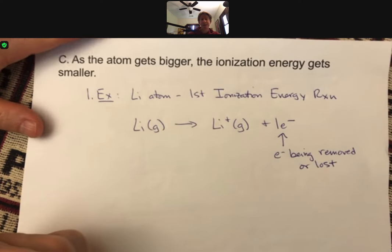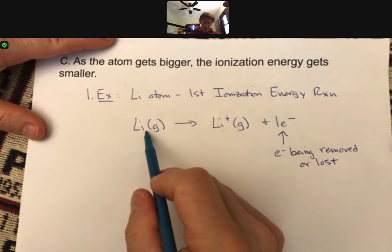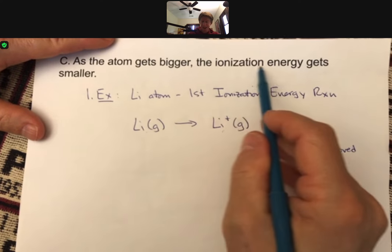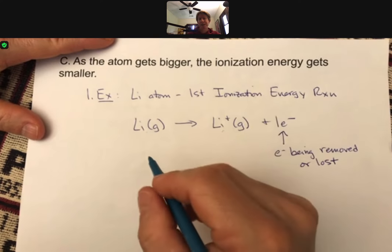And that's what an ionization energy is. You end up with an ion. So it's taking an atom and ionizing it. That's why it's called the ionization energy.